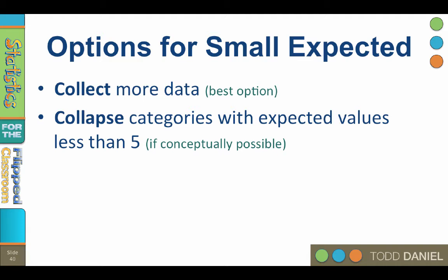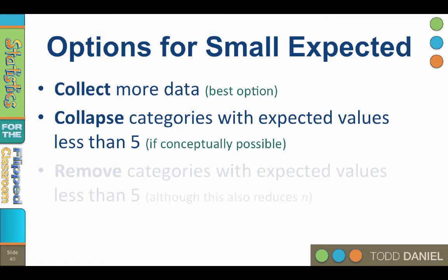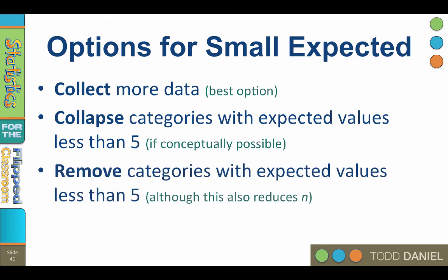Now if the categories cannot be combined, then you could remove categories with expected values less than 5. This will, of course, reduce your sample size, which may reduce the power of your test. On the other hand, if the people in those categories were underrepresented and you had plenty of people in the remaining categories, then you probably have enough people anyway, so this might not be a problem.